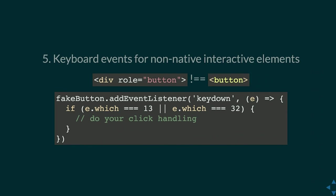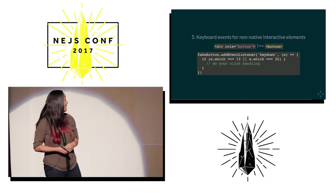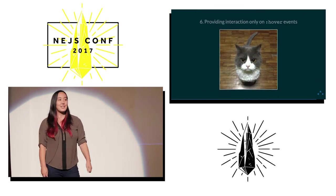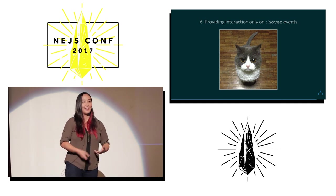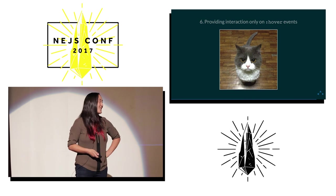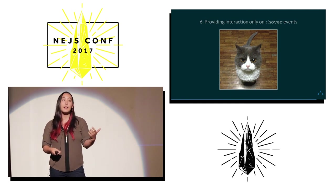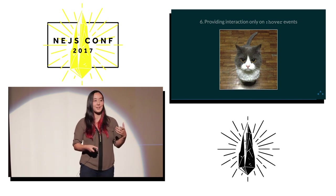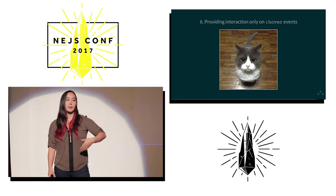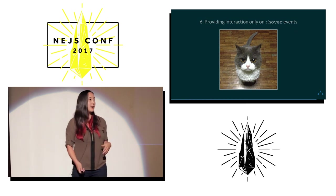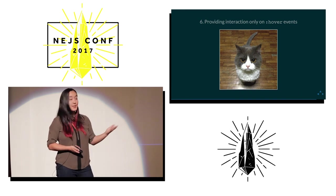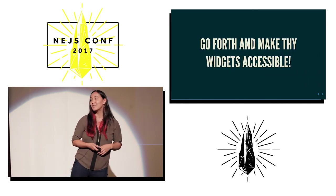You should still use ARIA roles because the screen reader will read it as a button, but you still have to handle the actual keyboard interaction yourself. First preference: just use a real button and style it. If you're doing something advanced like tabs — there's no native tab element — and you create it with a div, you have to handle keyboard events directly: key code 13 for Enter, 32 for Space. You can use event.key now, which is supported in most browsers. Also, providing interaction only on hover is self-explanatory — handle focus events too, and your tooltips and keyboard will be covered simultaneously. Go forth and make your widgets accessible.